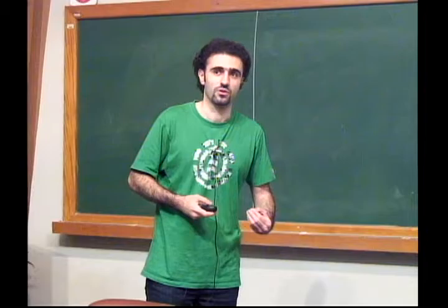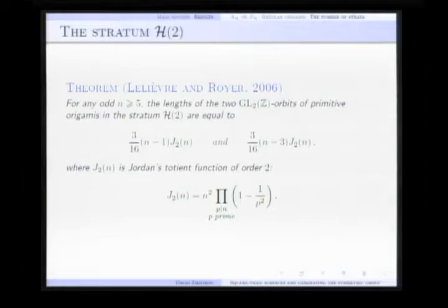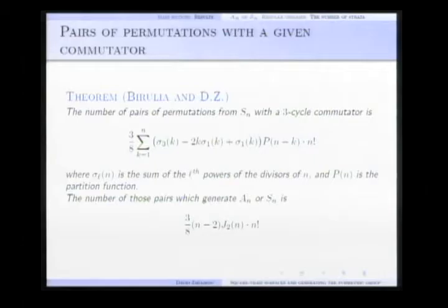We know that it's a theorem of McMullen that there are exactly two GL(2,Z) orbits of primitive square-tiled surfaces for n odd and exactly one orbit for n even. There are some examples of square-tiled surfaces in the stratum H(2) which are representatives of the orbits. And not only we know that there are two or at most two GL(2,Z) orbits in the stratum H(2), but also Hubert and Lelièvre calculated the length of the orbits. If there are two orbits then the lengths are given by this formula, since there is one orbit then it's just the sum of the two formulas.